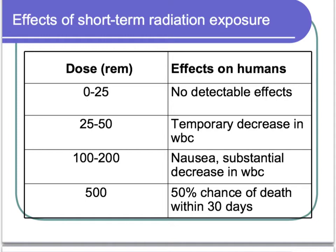To give you an idea of the effects of short-term radiation exposure on humans, looking at it in doses measured in REMs: between 0 and 25 REMs there are no detectable effects; between 25 and 50 REMs you'll get a temporary decrease in white blood cells; between 100 and 200 REMs you'll have nausea and a substantial decrease in white blood cell count; and 500 or more REMs gives about a 50% chance of death within 30 days. Radiation exposure can be very serious.